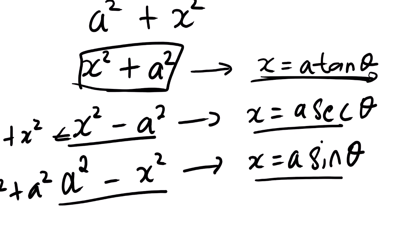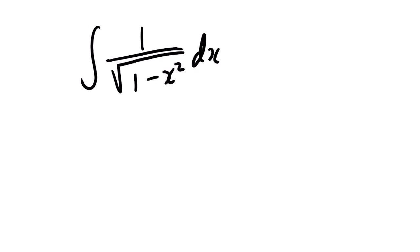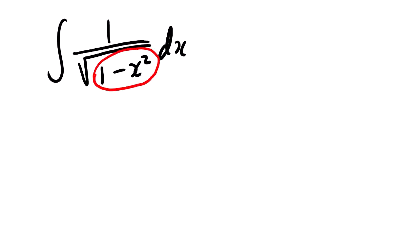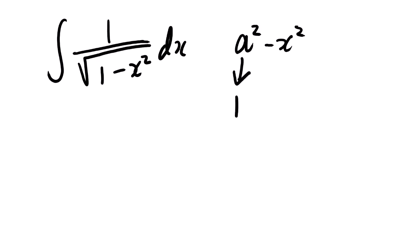Now let us actually look at examples and see how we apply this. Suppose we need to find the integral of 1 over the square root of 1 minus x squared with respect to x. The first step is to check which substitution to use — whether x equals a tan theta, x equals a sec theta, or x equals a sin theta. We can see that this expression matches the form a squared minus x squared, where a equals 1.